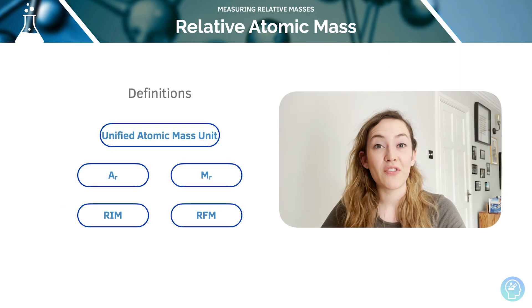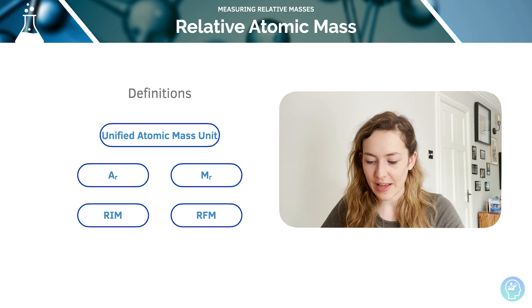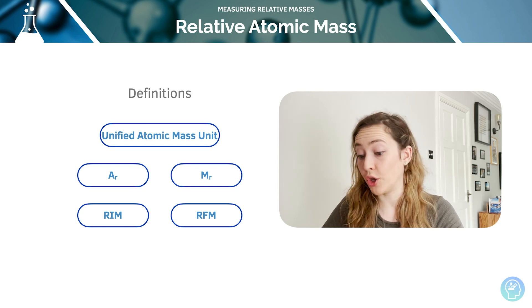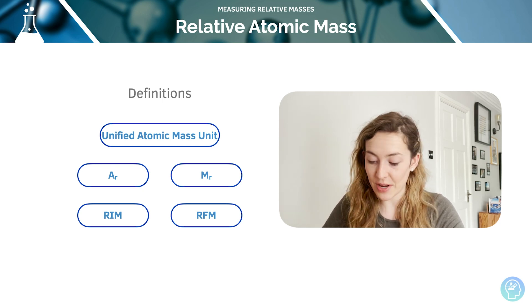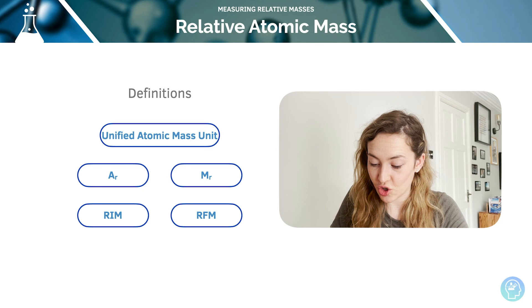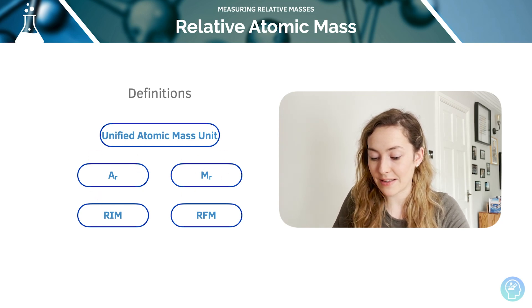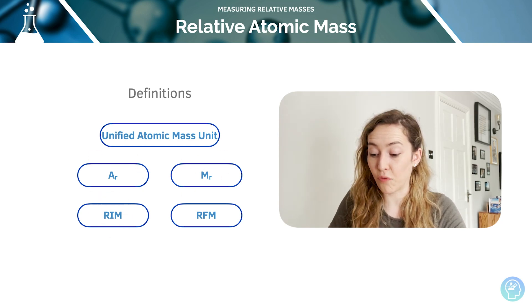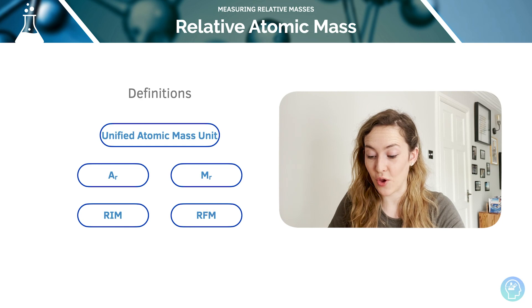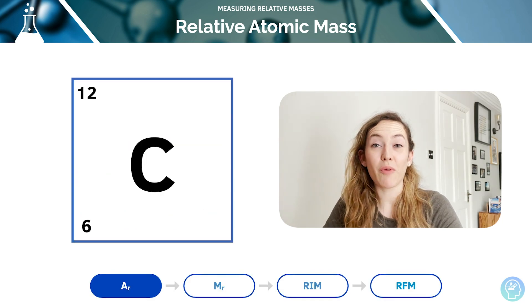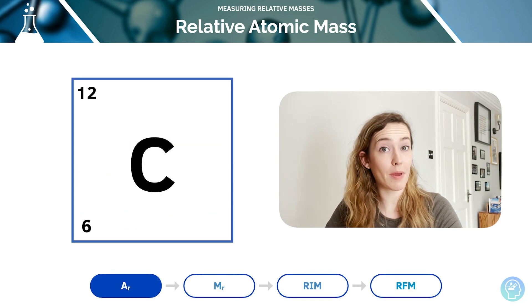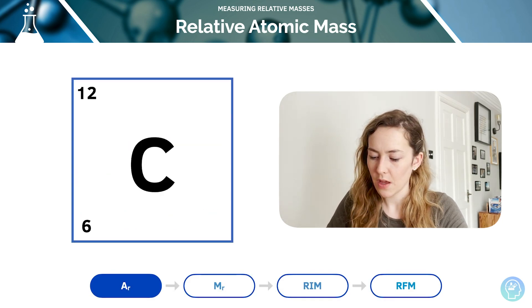There are some definitions you need to learn for this. We need to understand what a unified atomic mass number is and what some of these shortcuts are — so relative atomic masses, molecular masses, isotopic mass, and formula mass too. Let's jump right in and have a look at what our relative atomic masses are.